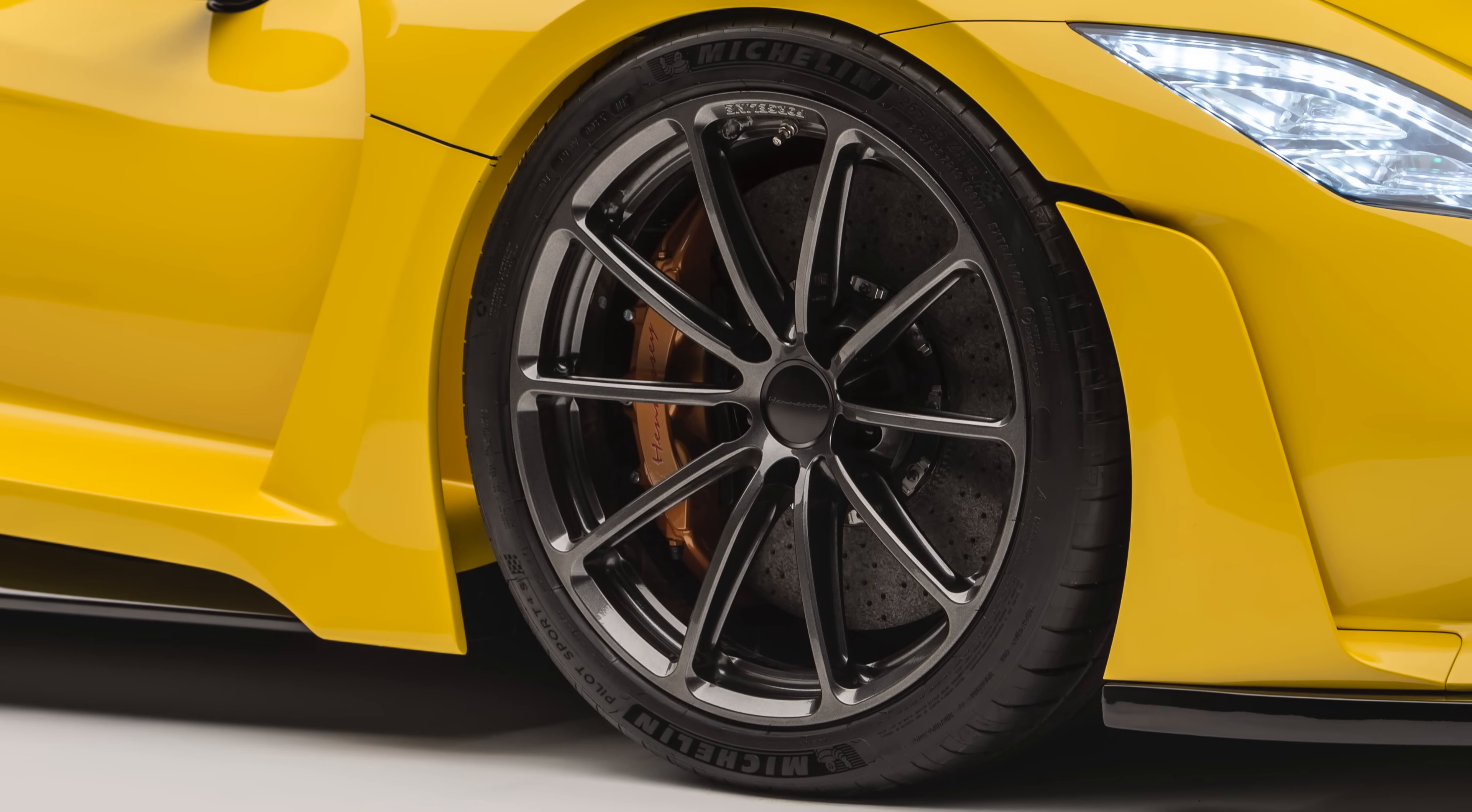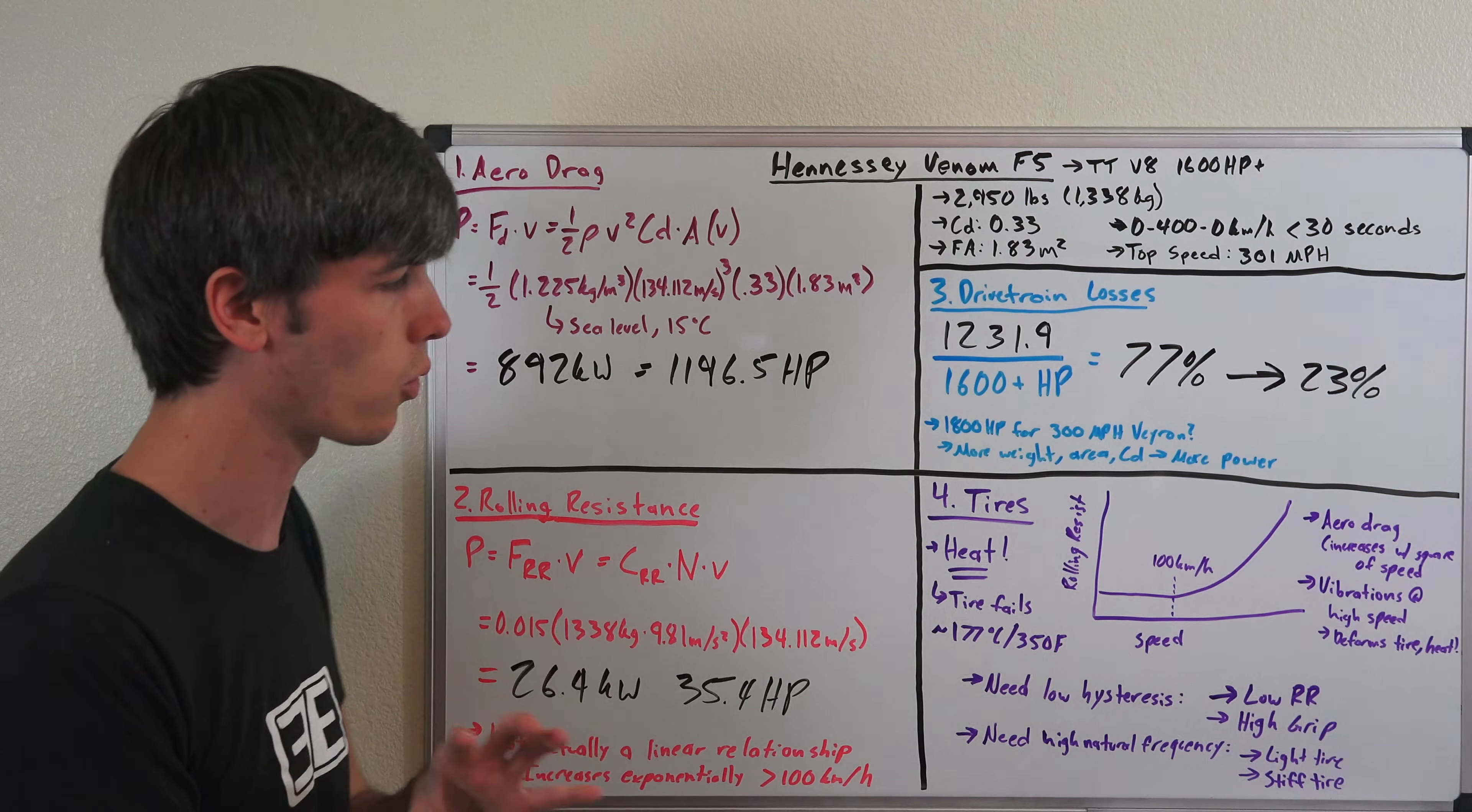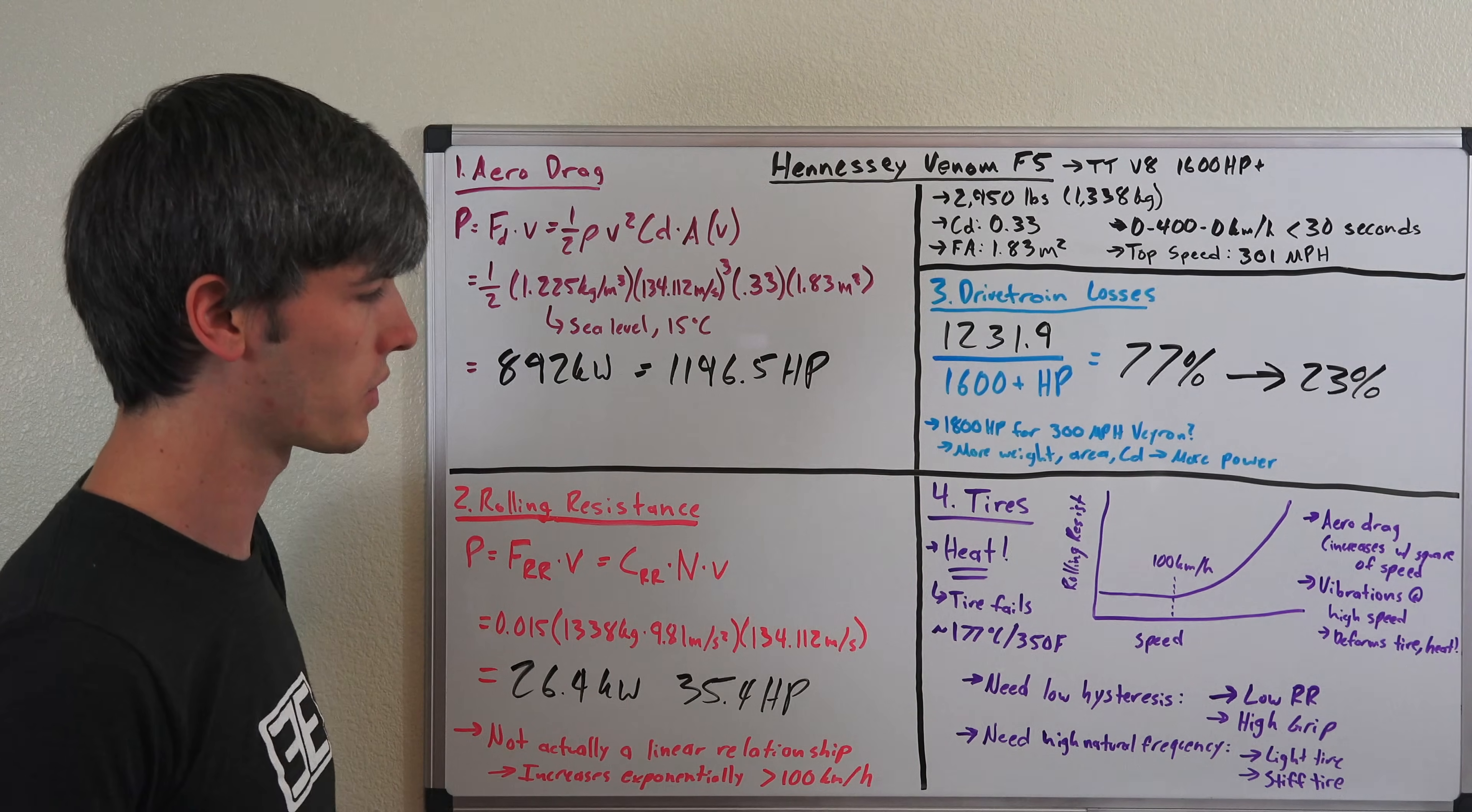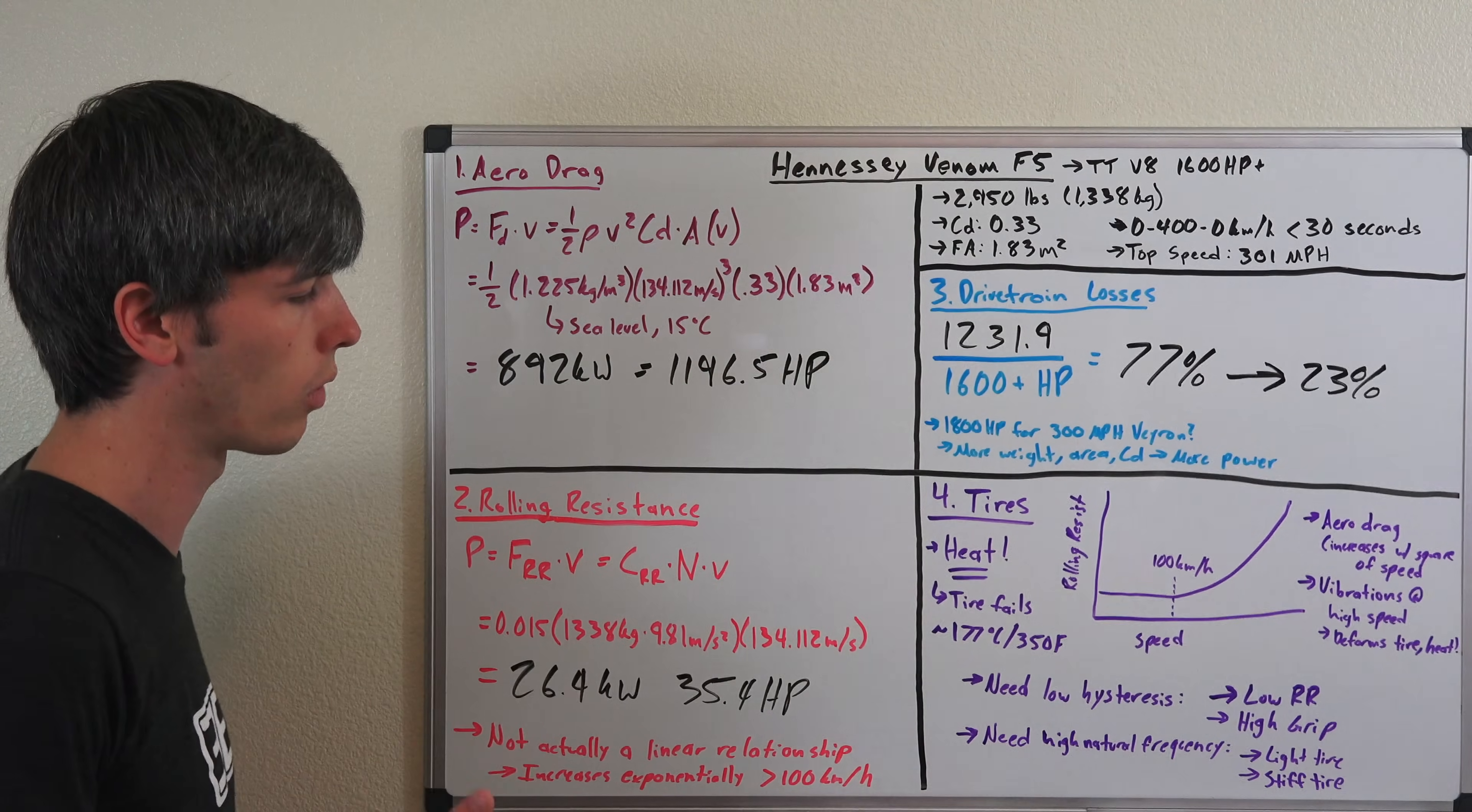There's really two things that you want in a tire that's going to be going at this super fast speed. You need low hysteresis, which means low rolling resistance—not much waste heat in that tire. But you also want high grip, of course, for a tire on this extreme performance car. And these two can kind of battle against each other: high grip versus low rolling resistance.